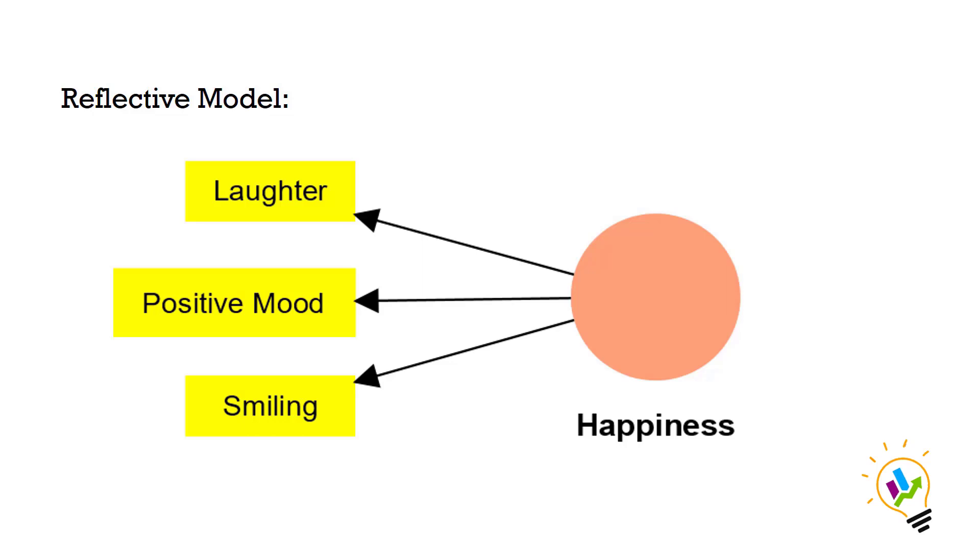For example, let's consider the construct happiness. We want to measure happiness using three observable variables: smiling, laughter, and positive mood. In this case, we assume that all these observable variables reflect the underlying construct of happiness. If a person is happy, they are more likely to smile, laugh, and have a positive mood. So the three observed variables are influenced by the unobservable construct of happiness.